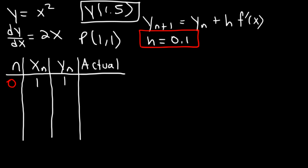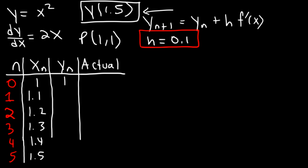Now before we calculate n equals 1, let's talk about the step size. We're going to go up to n equals 5. The step size h is 0.1, and that's going to change the x value by 0.1 each step. So the x values are going to be 1.1, 1.2, 1.3, 1.4, and 1.5. Our goal is to estimate the function value when x is 1.5, so that's where we stop.